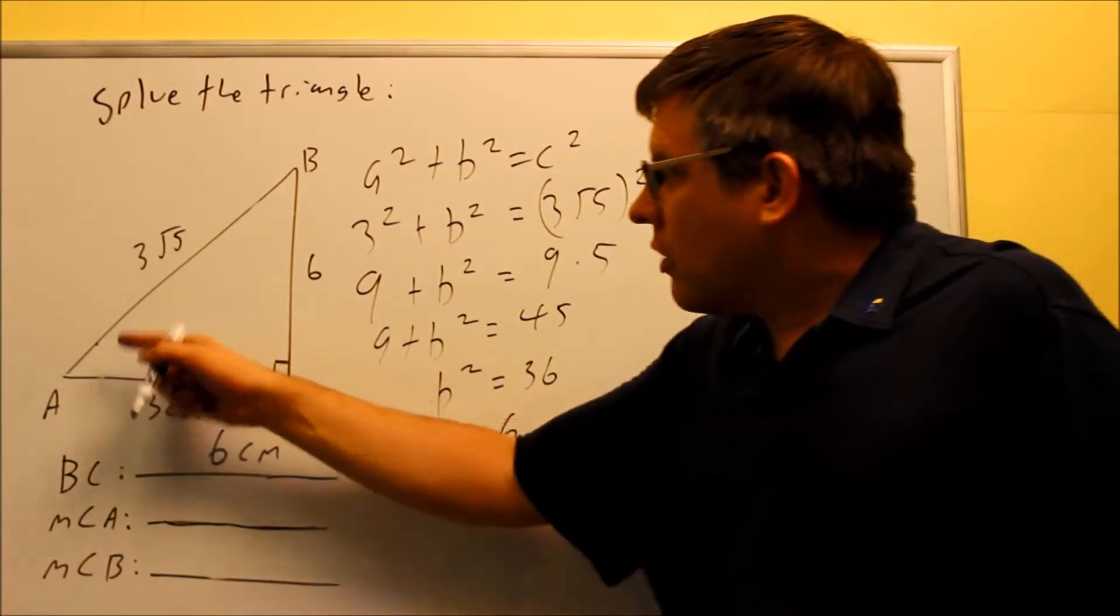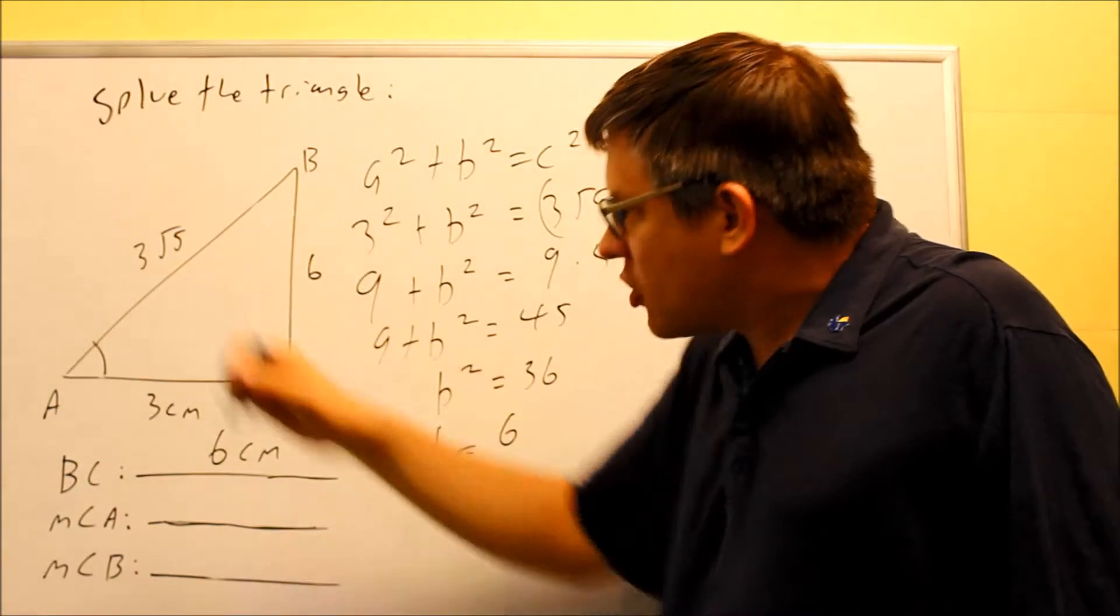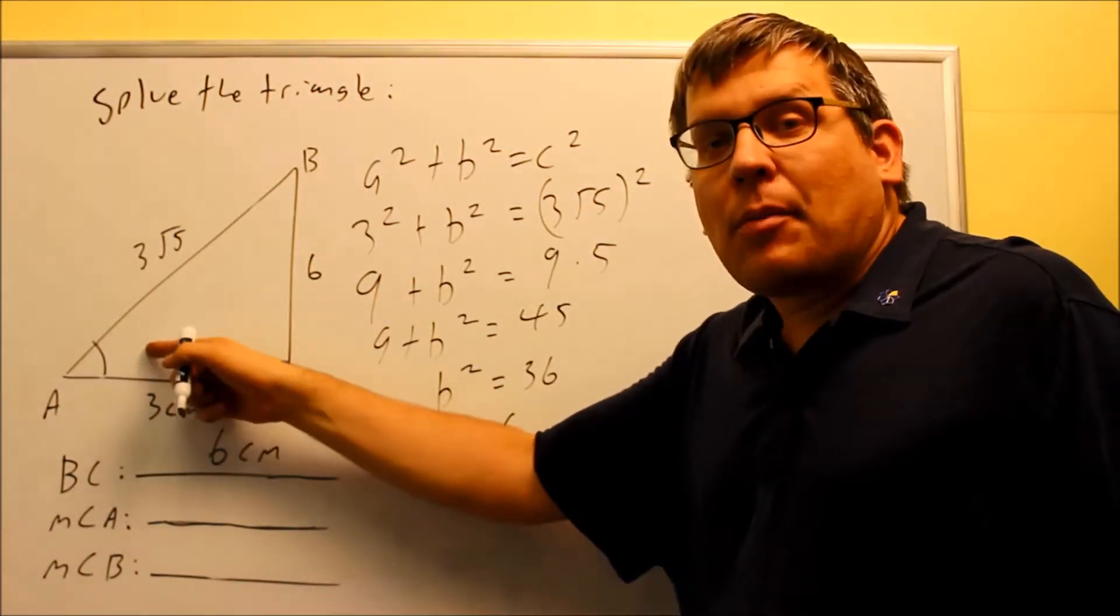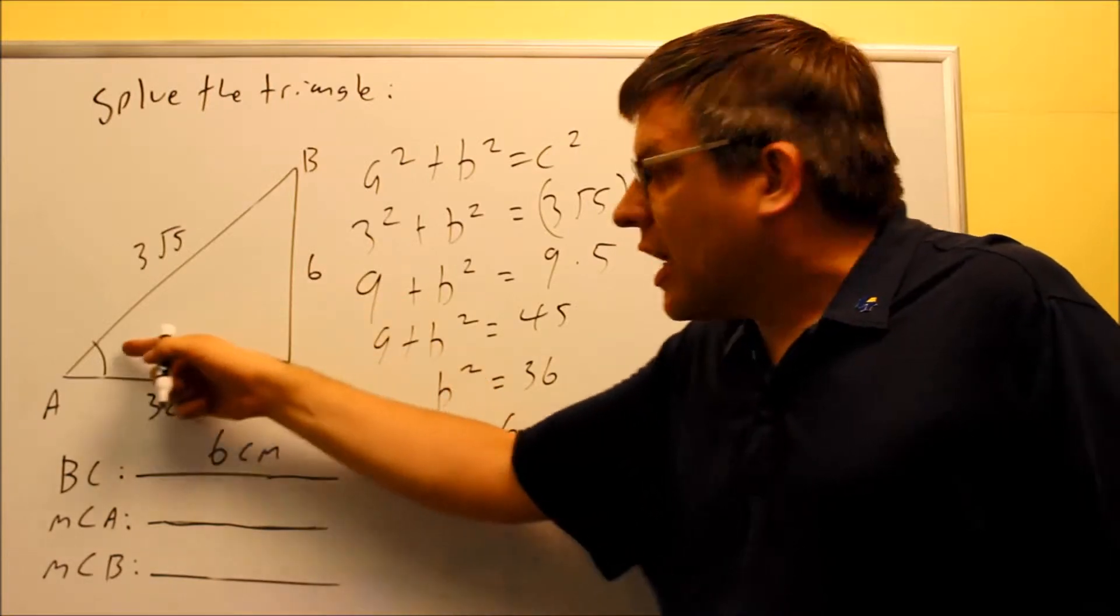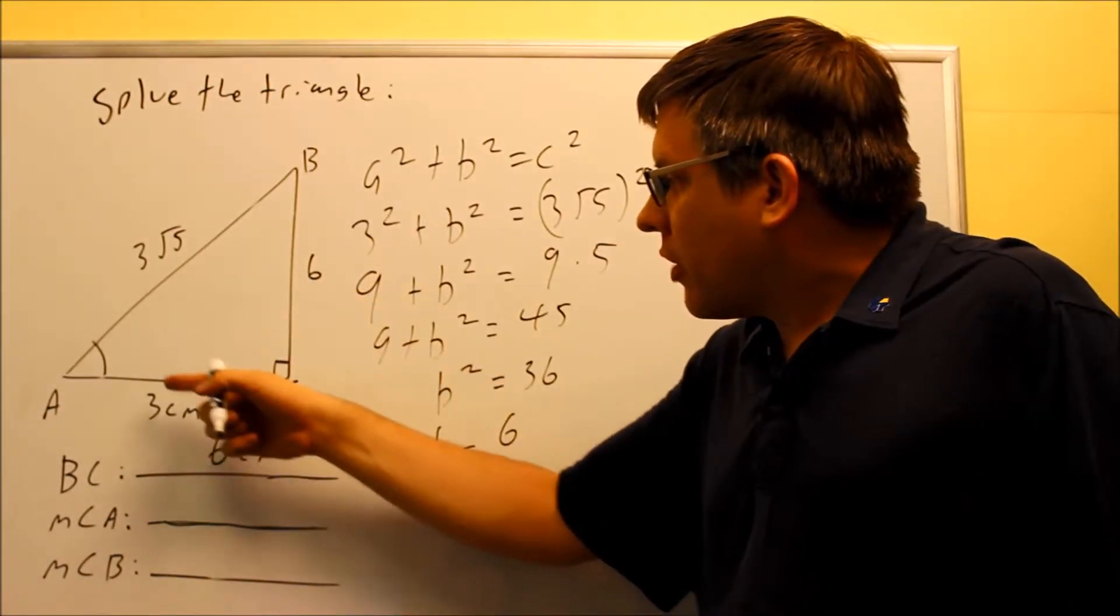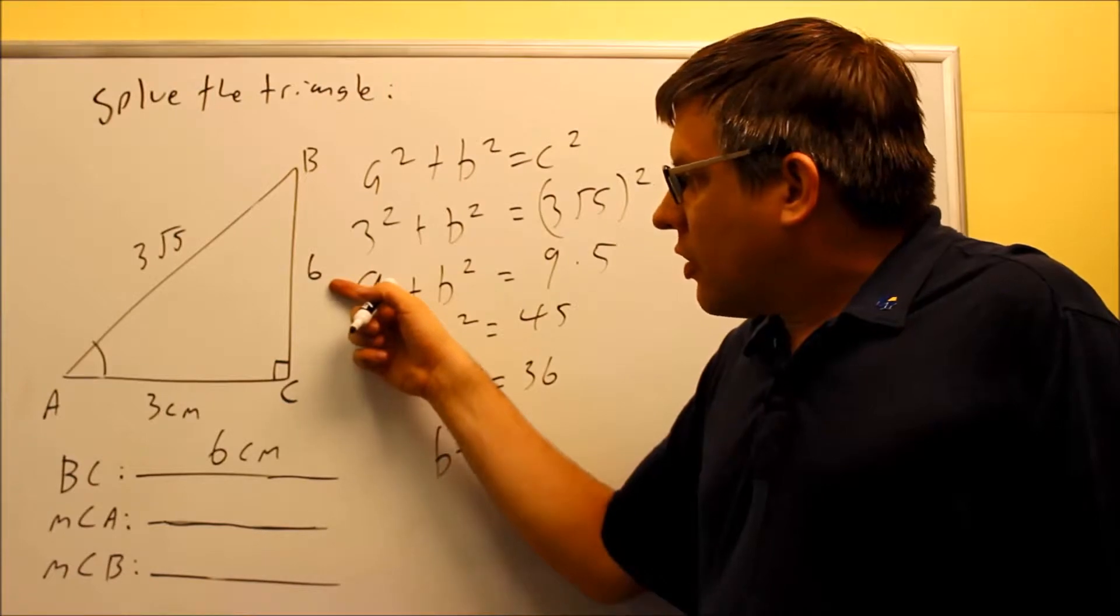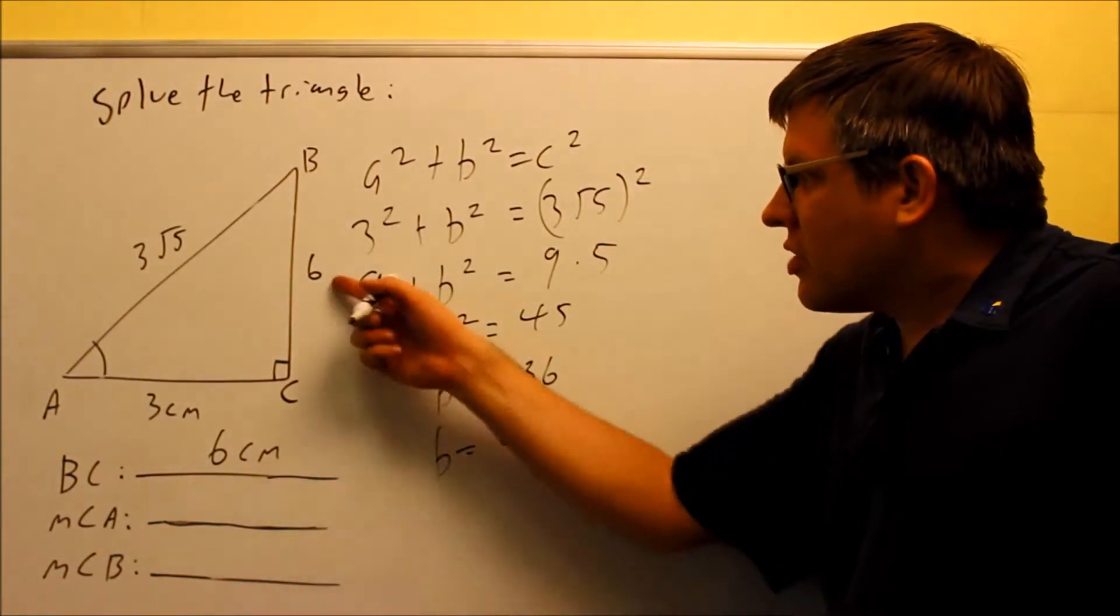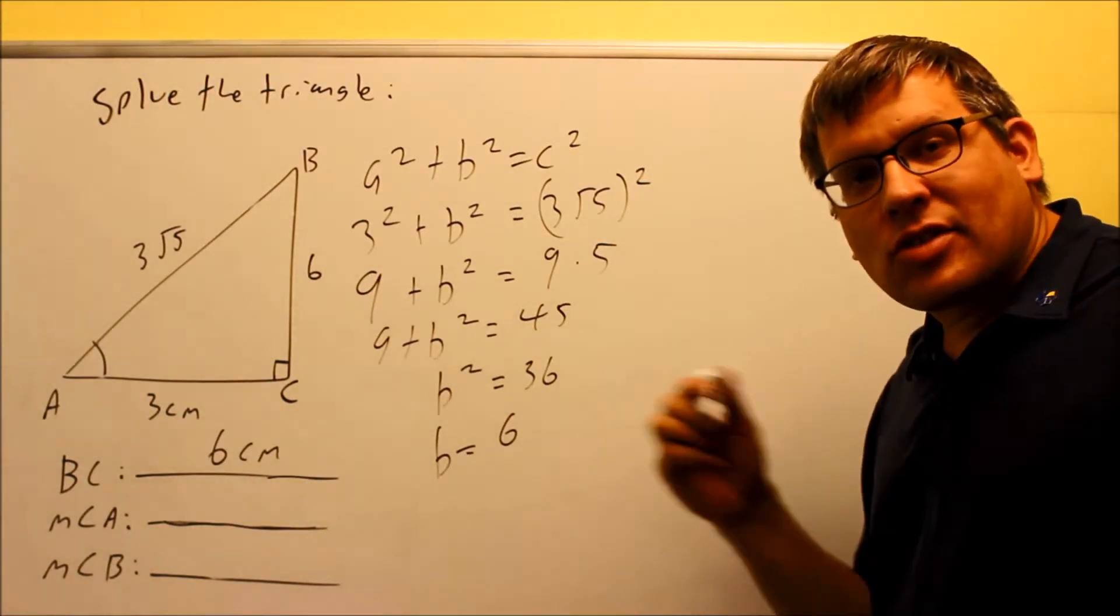So I'm going to do a trig function that relates to the 3 and the 6. Now if I'm going to do that, I'm looking, if I want to go for A, I'll start with measurement angle A first. Then, if I'm using A, the side opposite angle A, since that's the one I'm working with here and that's what I want to find, that's 6. So that means the adjacent side is going to have to be 3. So I want a trig function that relates to the opposite and the adjacent side, that's going to be our tangent.